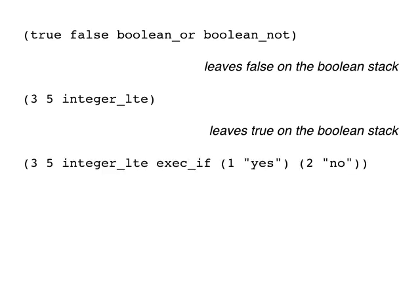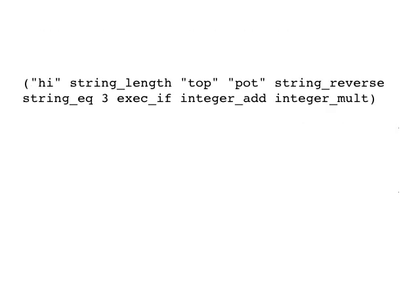Here we see how that boolean value can be used to cause the execution of one or another block of code using execif. When execif is executed, the two code blocks after it will be under it on the exec stack. Depending on what's on the boolean stack, one or the other will be removed and the remaining one will be left to be executed. In this case, that leaves 'yes' on the string stack and one on the integer stack.